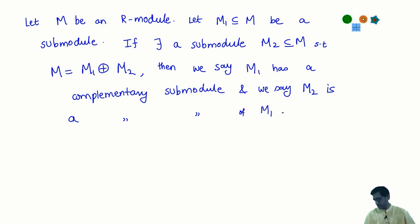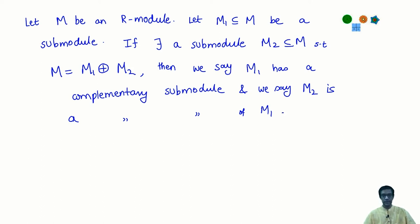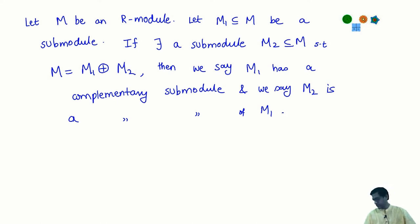The point here is that you may not in general have complements. Given an M₁, there may not exist an M₂. And the other important thing is, even if it does have a complement, the complement need not be unique. There are often many different submodules, each of which serves as a complement to the given module. Let us look at some examples.